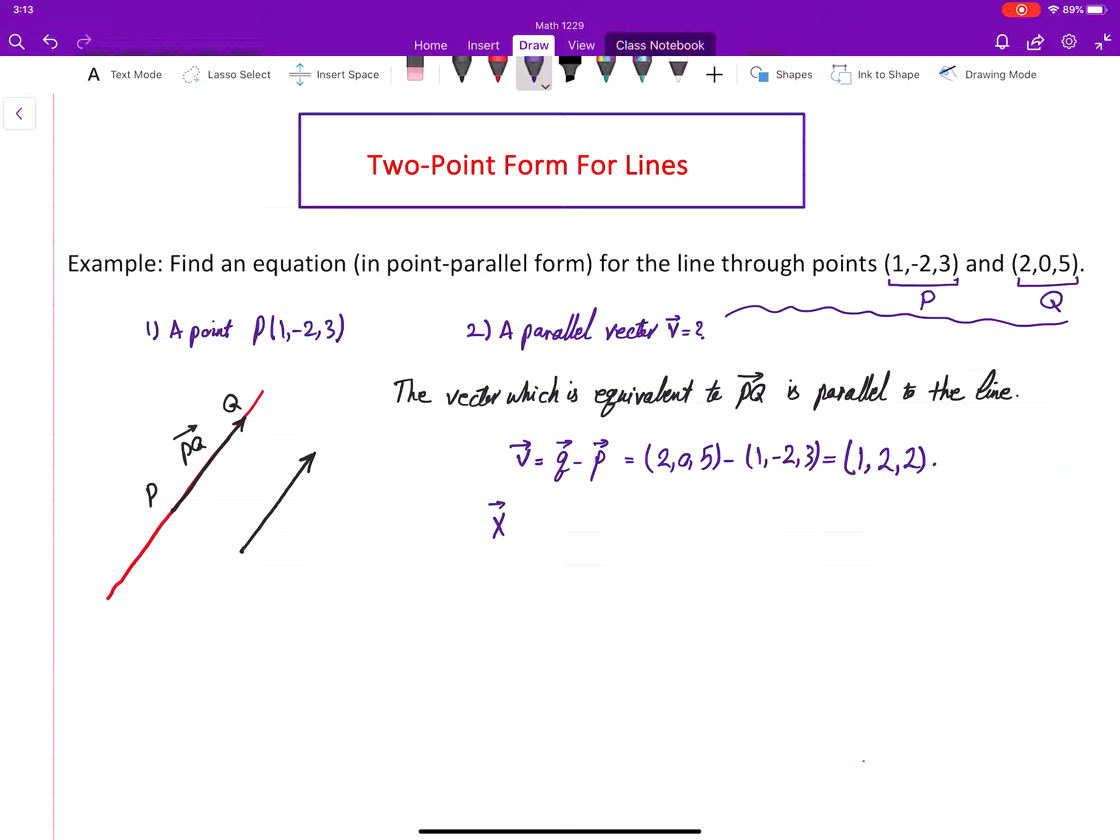Once we have V, then we can go ahead and write the point-parallel form: P, here is (1, -2, 3) plus t times V, which is (1, 2, 2).